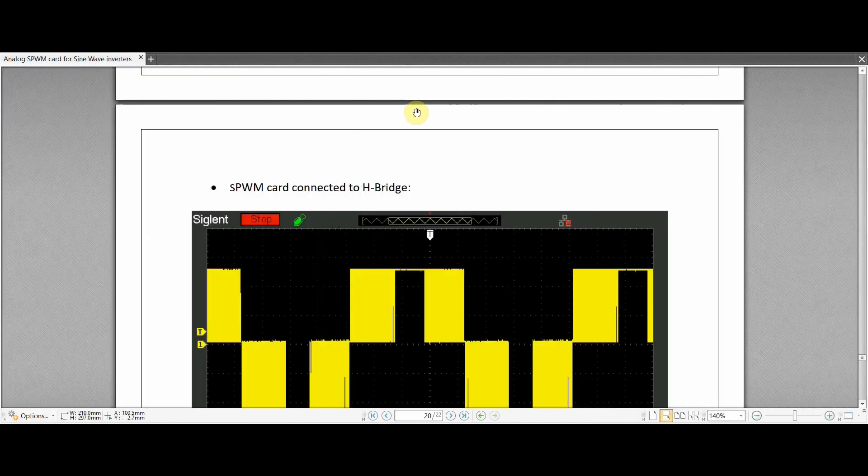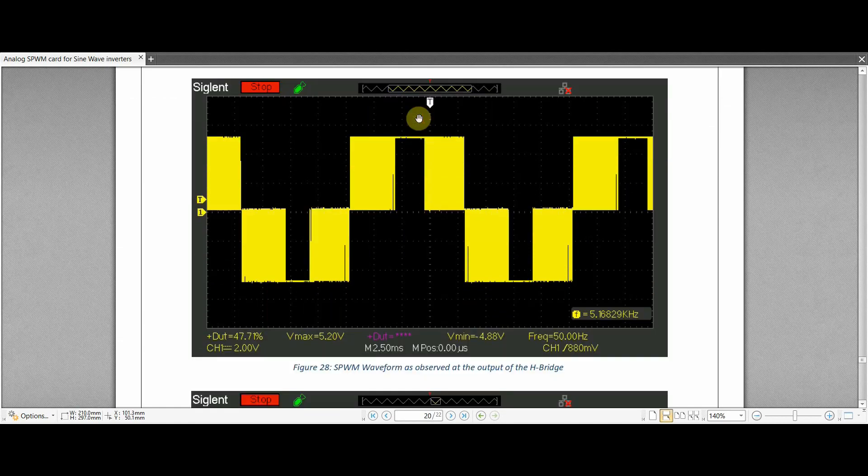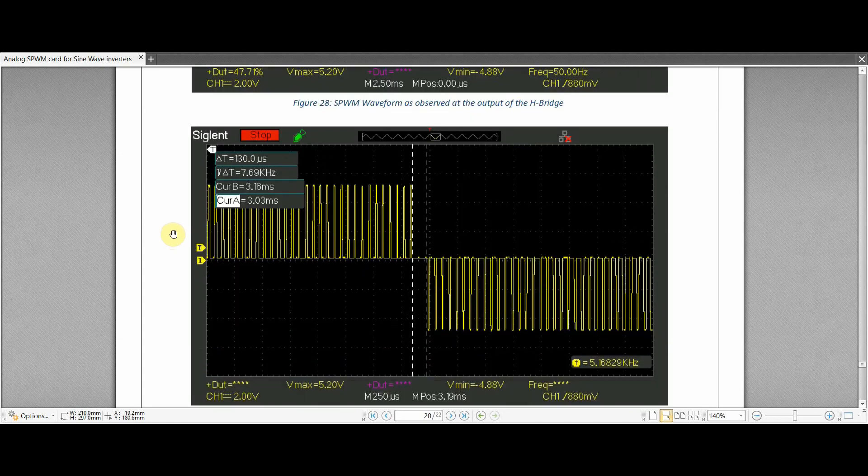With all the four control signals, it is now time to put it as an input to the H-bridge and evaluate the output. And this is what the output looks like. It is not quite the sine wave that we have expected but we can clearly see the inverted magnitudes of the individual SPWM signals of the half cycle. The sine wave can be obtained by putting this SPWM signals through an LC low-pass filter which is the next step of our project. You can also see that we have a dead time of 130 microseconds in between the switching of the two half cycles.